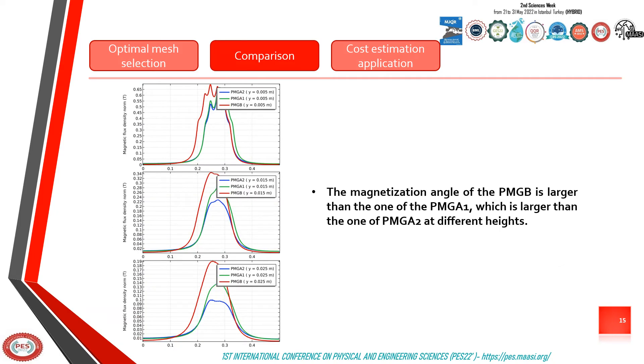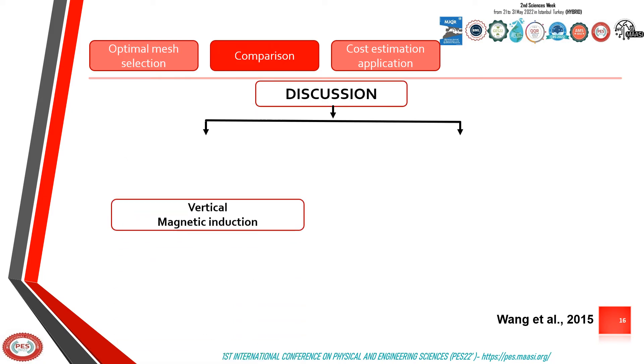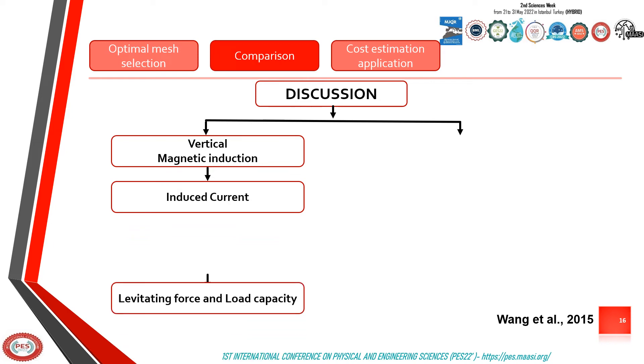We can see also that the magnetization angle of the PMG B is larger than the one of the PMG A1, which is larger than the one of the PMG A2 at different heights. We conclude that the higher the vertical magnetic induction, the higher the induced current, the higher the levitation force and load capacity.